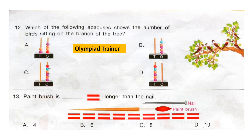Question 13: The paintbrush is dash units longer than the nail. Count how many units long the paintbrush is, then count for the nail, and find the difference. The paintbrush is 7 units long and the nail is 3 units long, so 7 minus 3 equals 4 units. The answer is option A: 4.